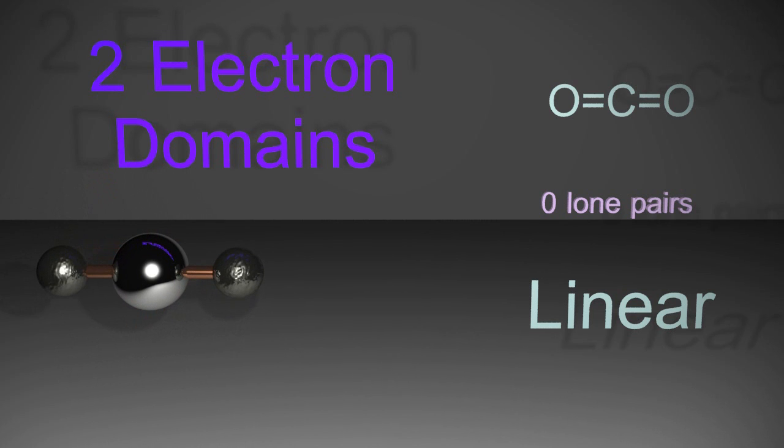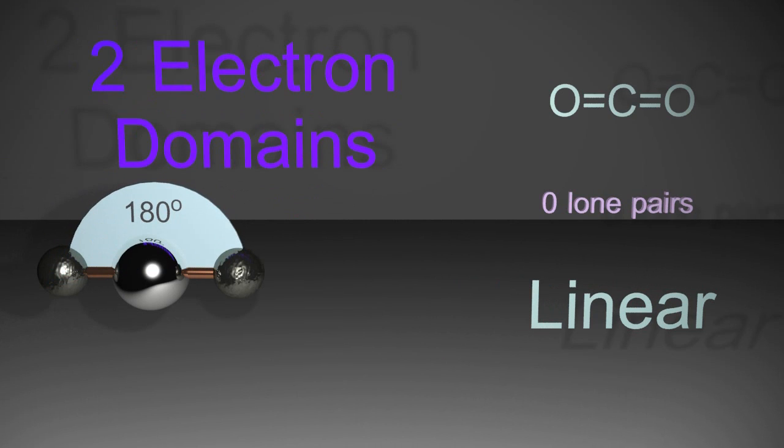Well, the two electron domains here and there repel each other according to VSEPR theory, which means they're going to try to get as far away from each other as possible, which means they're going to be on opposite sides of that central atom, giving us a bond angle of 180 degrees.